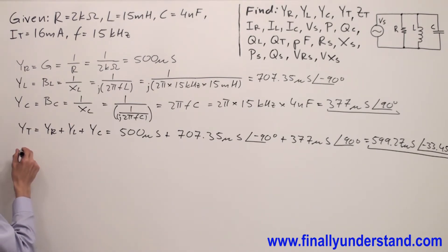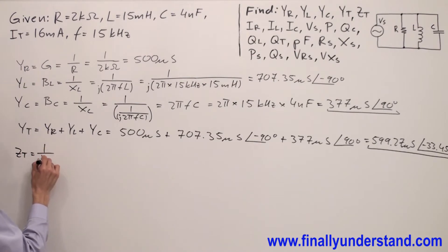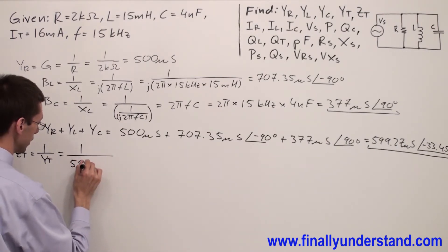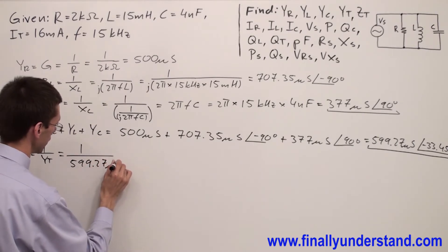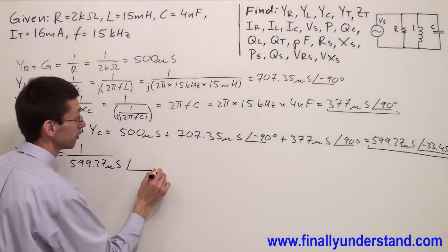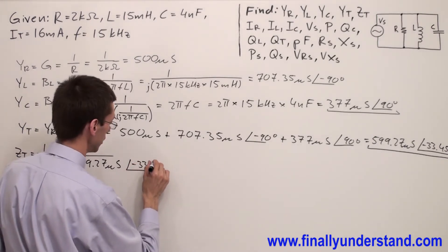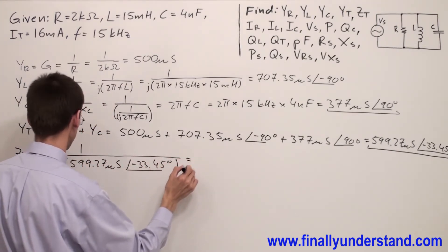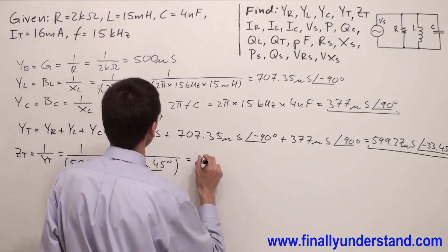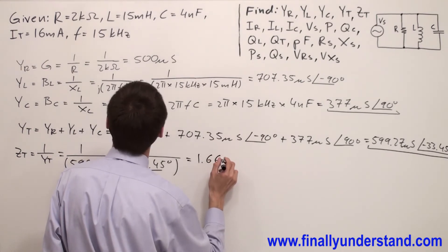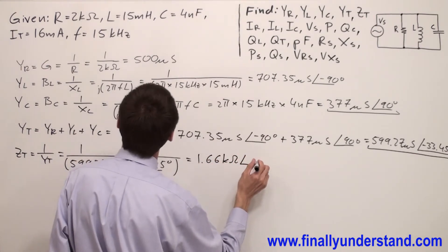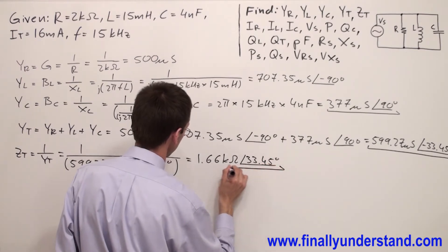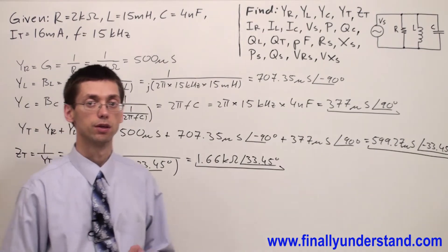Next I can find Z_total. Z_total is equal one over Y_total, so one divided by 599.27 microsiemens and angle of negative 33.45 degrees. This is equal 1.66 kilo ohms and angle of 33.45 degrees. So this is the total impedance of my circuit.